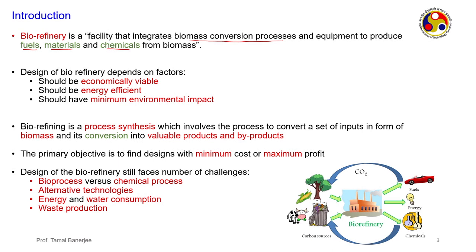For materials, if you conduct pyrolysis — a process done in the absence of oxygen — the biomass converts into a solid fraction called tar and a gaseous fraction. The tar is a useful material from which you can produce different aromatics like benzene, toluene, and xylene. Chemicals include ethanol, butanol, and many platform chemicals like 5-HMF and levulinic acid.